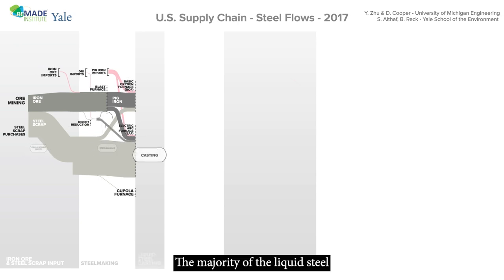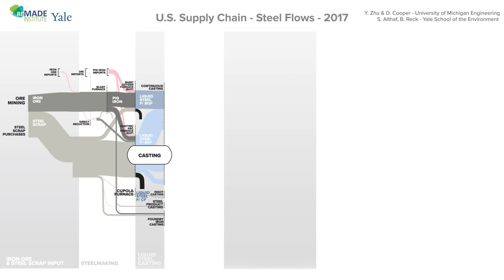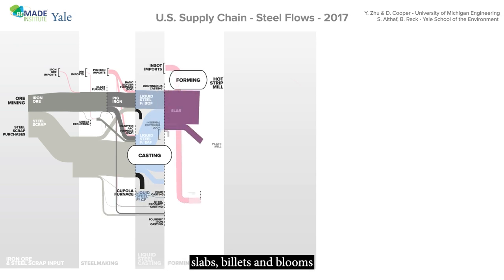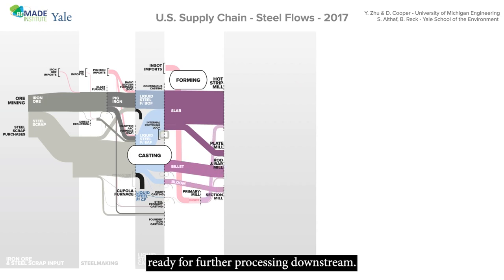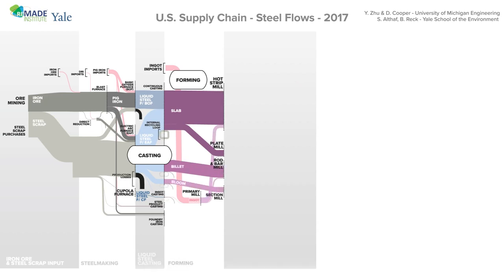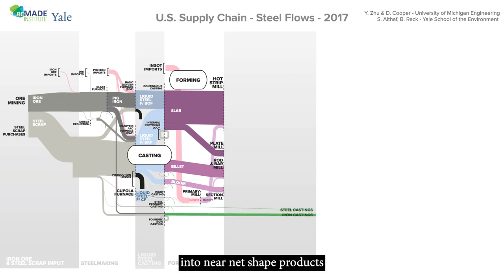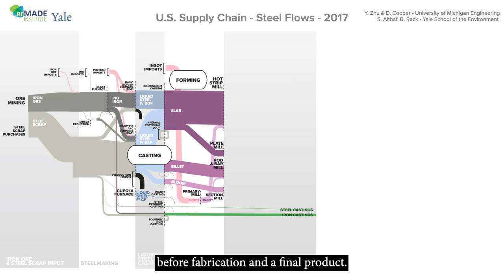The majority of the liquid steel is continuously cast into intermediate product shapes — slabs, billets and blooms — ready for further processing downstream. Small amounts of liquid steel and iron are directly cast into near net shaped products that may be machined and heat treated before fabrication into a final product.